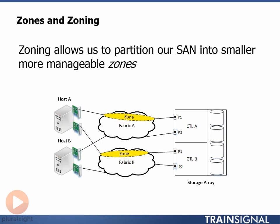Once zoning is enabled in your fabric, you effectively lock down that fabric, meaning that all devices that are not in a zone in the active zone set will be unable to communicate with any other devices on the fabric. Host B is locked out and unable to communicate with our storage array. Even though there may be a valid physical connection — the HBA ports, switch ports, array ports, and cables all exist and are installed correctly — the fact that zoning is not configured to allow communication means no logical connection can be established. It's a bit like two systems on the same IP network, all cabled up correctly, but if the firewall doesn't allow the two systems to communicate, then no logical connection can be made despite there being a good physical connection.